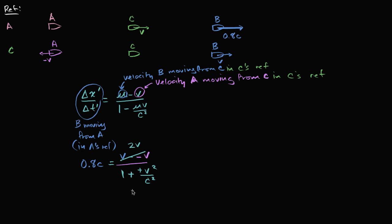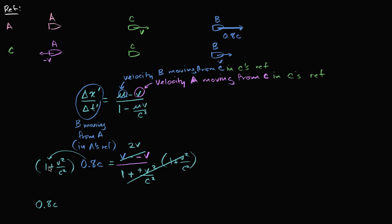We're going to want to solve for v. We can multiply both sides of this equation by one plus v squared over c squared. On the right-hand side, those cancel. And on the left-hand side, we can distribute the 0.8c, and we will get 0.8c plus 0.8c times v squared over c squared. The c in the numerator cancels with one of the c's in the denominator, so it's plus 0.8v squared over c, and that equals 2v.